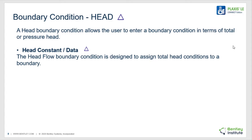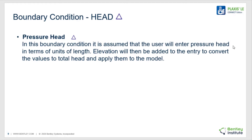A head boundary condition provides a more numerically stable boundary condition, which may be entered in terms of total or pressure head. Head boundary conditions can be entered as constant values or as a function of time with transient numerical models. The user may also specify a head boundary condition as a constant or a data table in terms of pressure head. In this case, elevation will be utilized as the entry to convert the values to total head and subsequently apply them in the numerical model.